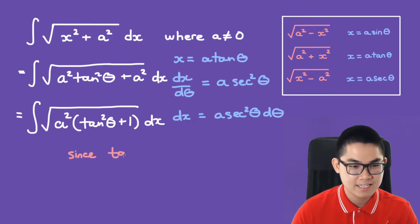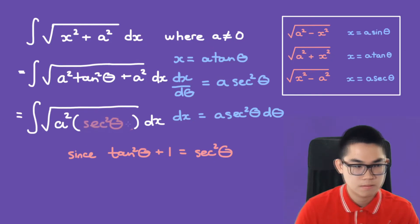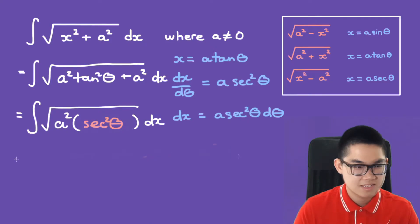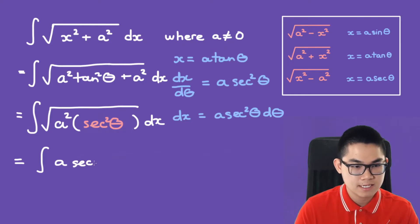Since tan squared plus 1 is equal to secant squared, we can substitute that in. So the square root of a squared times secant squared simplifies to just a times secant.